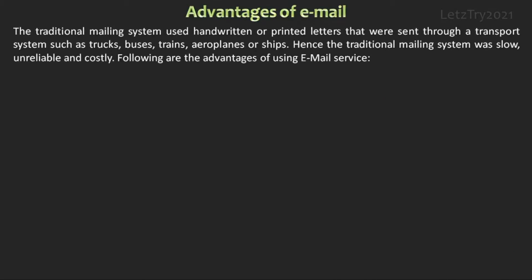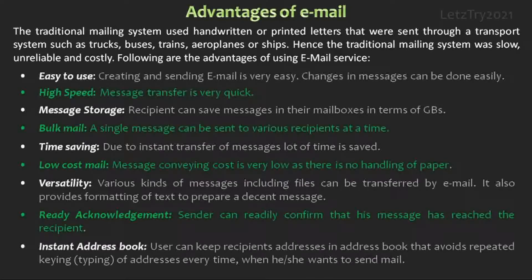The traditional mailing system used handwritten or printed letters sent through a transport system such as trucks, buses, trains, aeroplanes, or ships — hence it was slow, unreliable, and costly. Advantages of email: Easy to use — creating and sending email is very easy. High speed — message transfer is very quick. Message storage — recipients can save messages in their mailboxes in terms of GBs. Bulk mail — a single message can be sent to various recipients at a time. Time saving — due to instant transfer of messages, a lot of time is saved. Low cost — message conveying cost is very low as there is no handling of paper. Versatility — various kinds of messages including files can be transferred by email, and it also provides formatting of text.